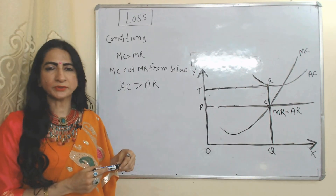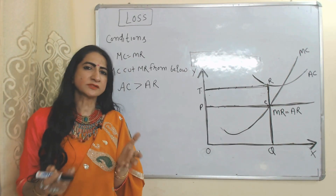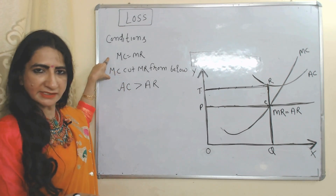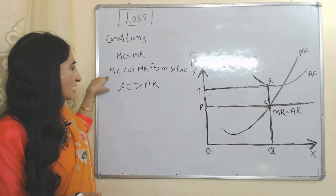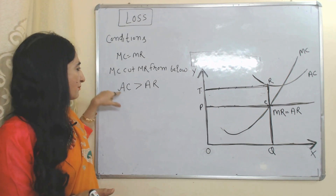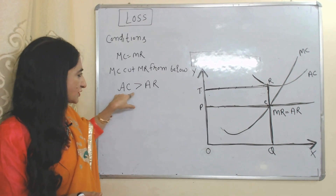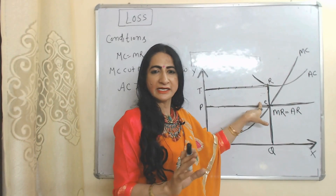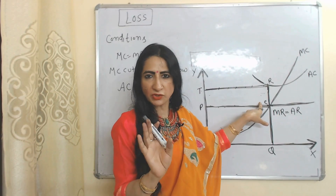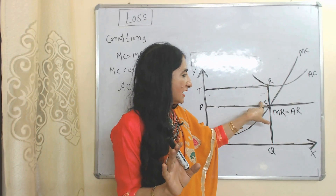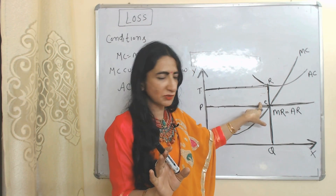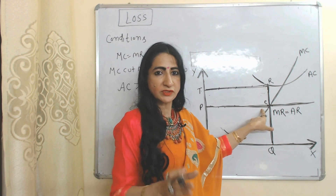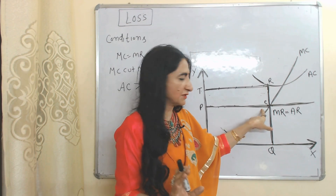Now we are going to talk about loss. Loss means our cost is more than revenue. Two conditions remain the same: MC equal to MR, and MC cuts MR from below. But in case of loss, average cost is more than average revenue. E is the equilibrium point. At this E point you can see MC equal to MR, MC cuts MR from below, and you can also see average cost is more than average revenue.